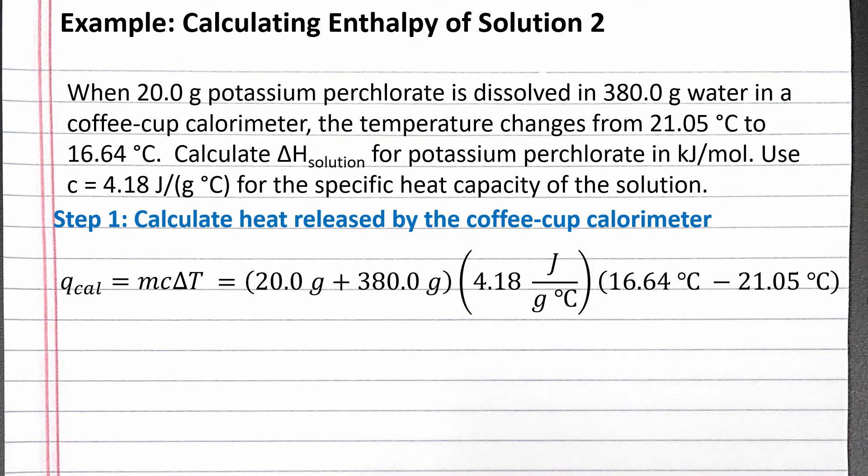The change in temperature is final minus initial: 16.64 degrees Celsius minus 21.05 degrees Celsius. Completing the calculation, the calorimeter contents released 7,374 joules. We know energy was released because the sign of heat is negative.